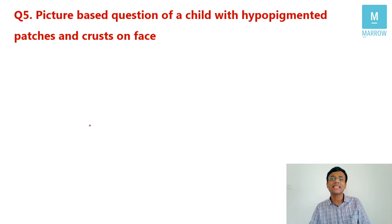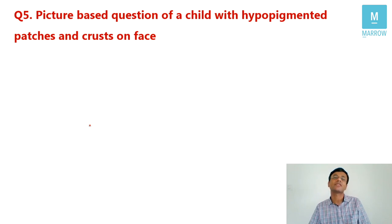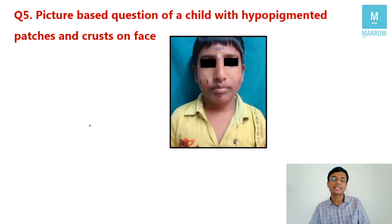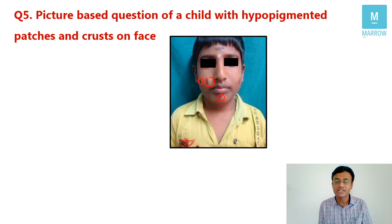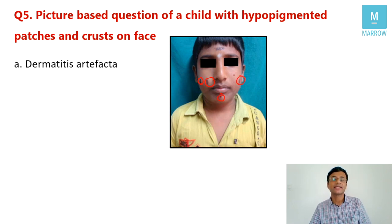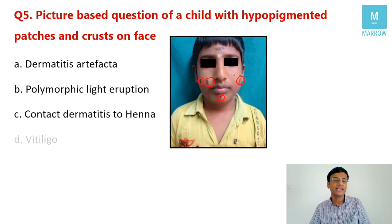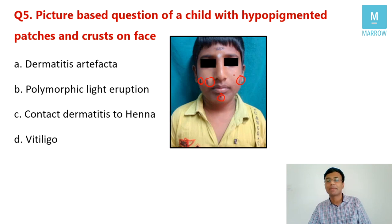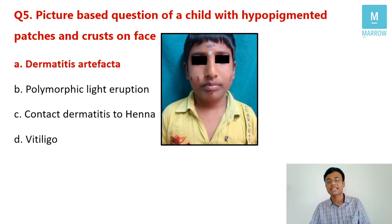The next question was image-based in AIIMS, showing a girl child with hypopigmented patches and crusts. The image resembled a boy's picture showing multiple hypopigmented crusted lesions over the face with a bizarre distribution. The options were dermatitis artifacta, polymorphic light eruption, contact dermatitis to henna, and vitiligo. The best fit for the bizarre pattern shown was dermatitis artifacta.